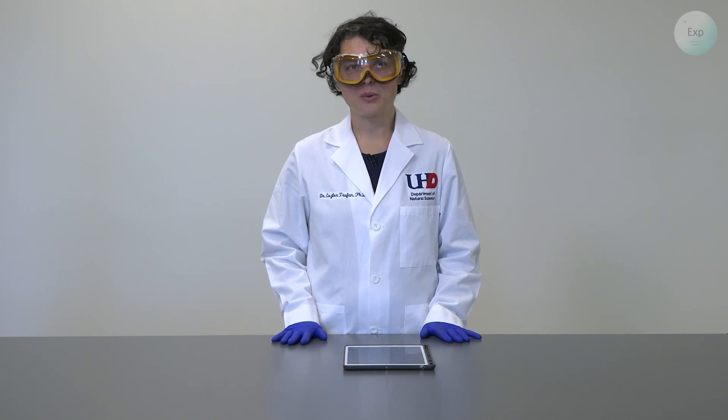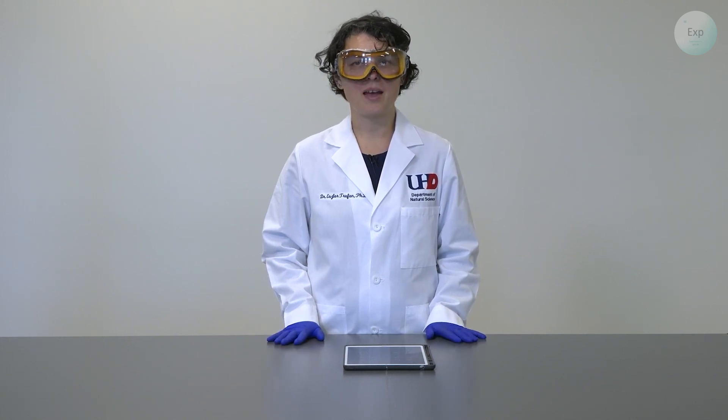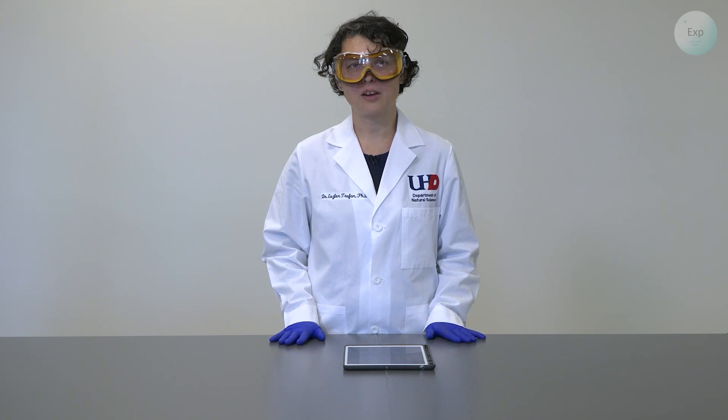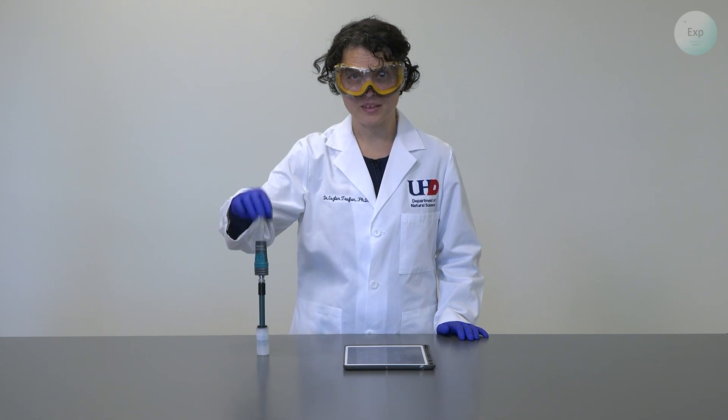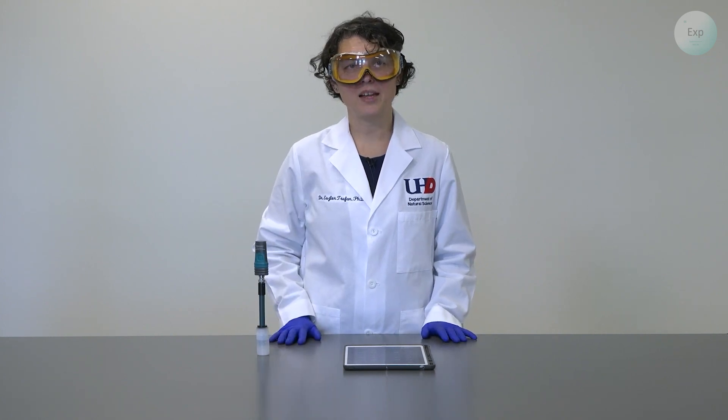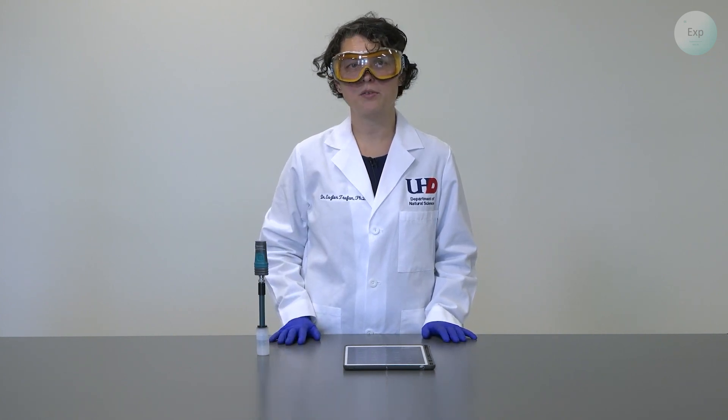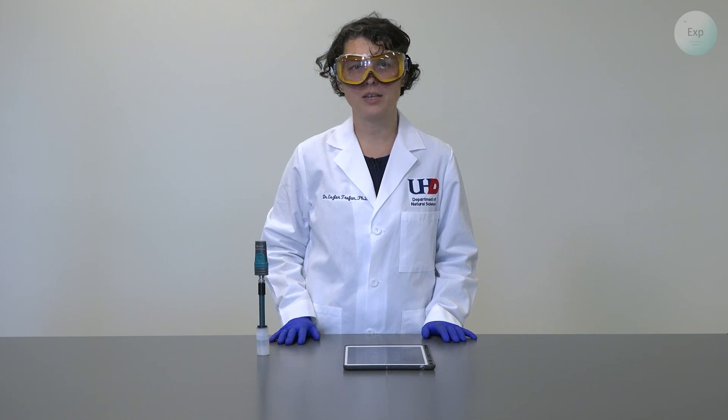For this process, we're going to need a pH probe, and today we're going to use the wireless Vernier pH probe. I have one here. We're going to perform a two-point calibration, which means we will need two buffers, one at a pH of 4 and one at a pH of 10.